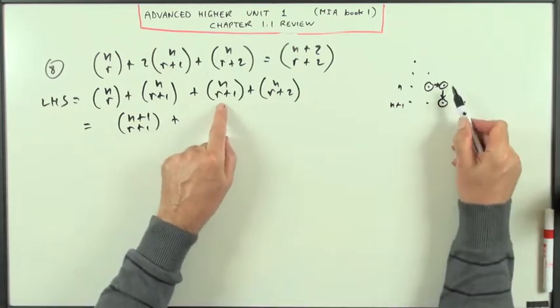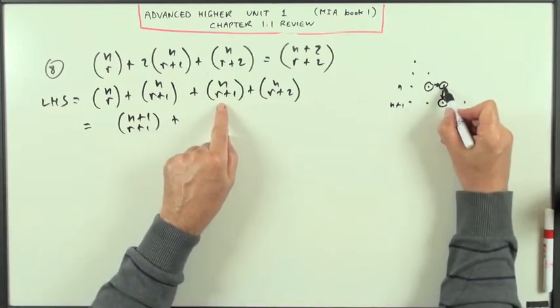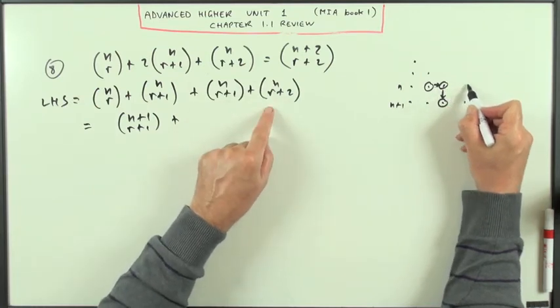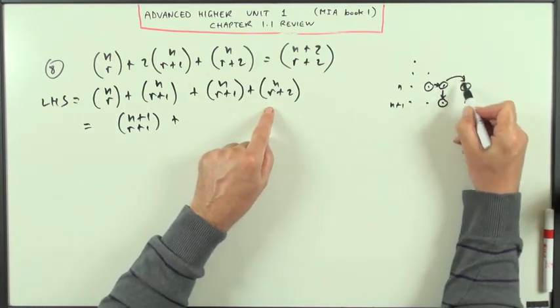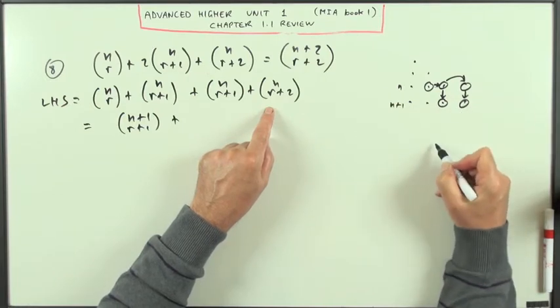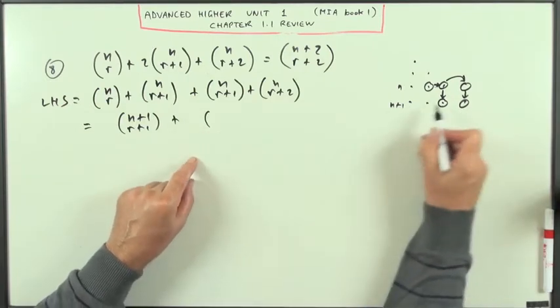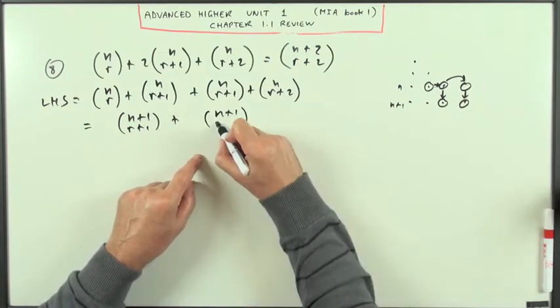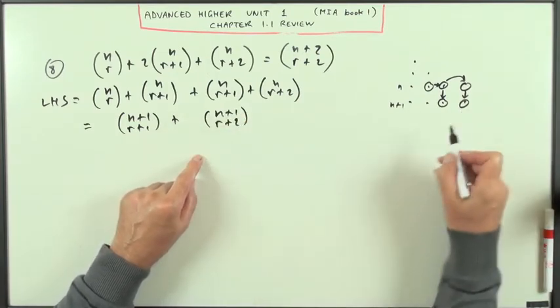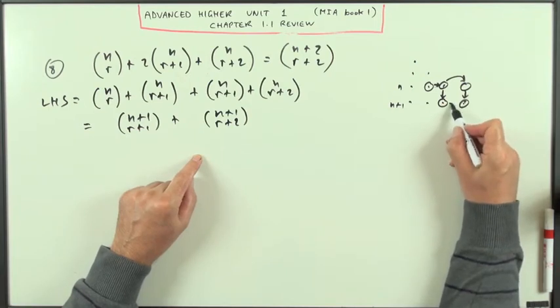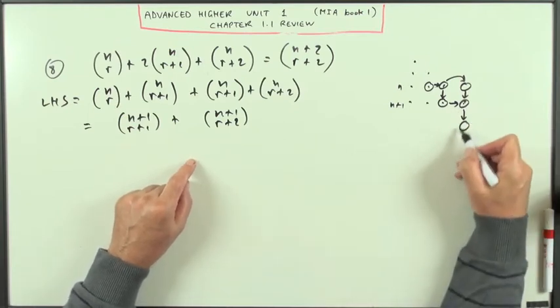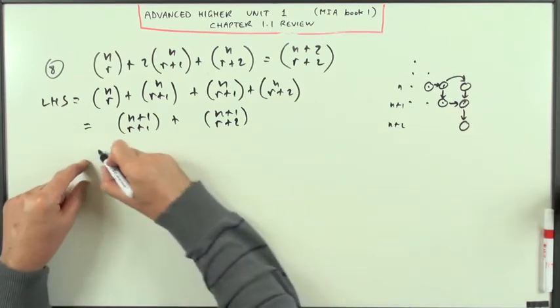And this one simply says, well, if I've got n choose r plus one and I stay in the same row and go to n choose r plus two, then those two together would produce this one down here. So they would produce in the next row, in n plus one, r plus two. But these are also consecutive ones. So those two together would add up to give the one below the second one, dropping down to the next row, n plus two.